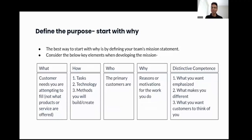The best way to start with why is by defining your team's mission statement. To develop a mission statement, consider five key elements: what, how, who, why, and your distinctive competence. What are the customer needs you're attempting to fill? How defines the task, technology, and methods you will build or create. Who is the primary customer? Why is the reason or motivation behind your work. And distinctive competence, also known as MOT, is what you want emphasized — what makes you different, what you want your customers to think of you.